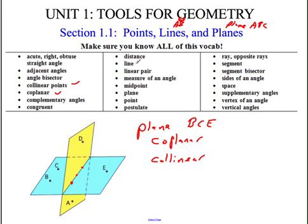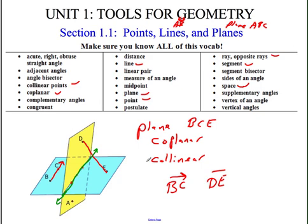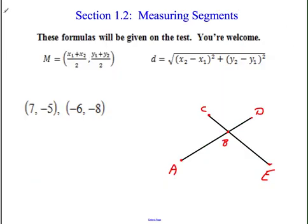We also covered rays. A ray like ray BC has to start at B and go through C, so B has to be first. Segments look like a flat line on top — for example, segment DE. We talked about space, which is just everywhere. There were also some postulates — things we assumed were true. The big one: when two planes intersect, they form a line. And when two lines intersect, they intersect at a point.